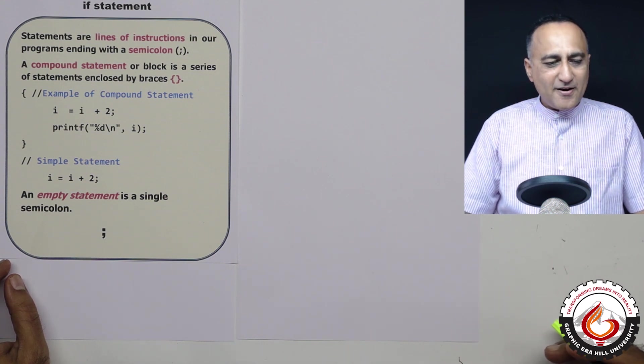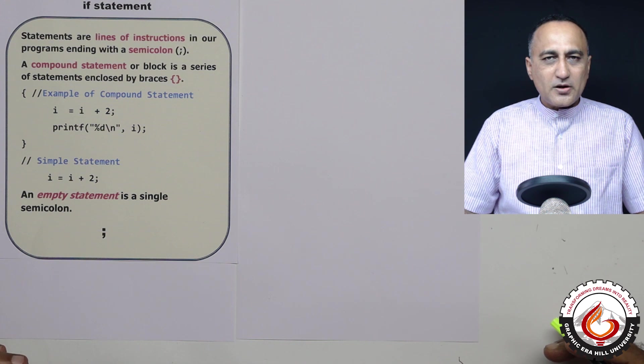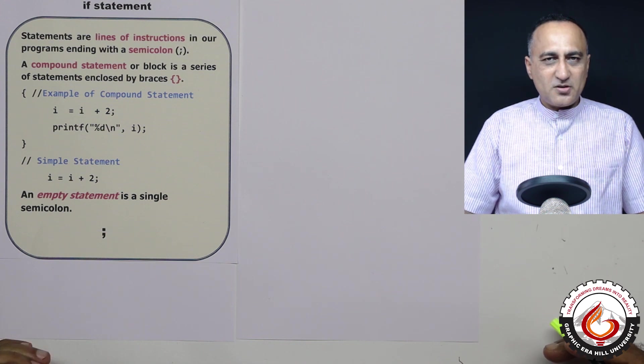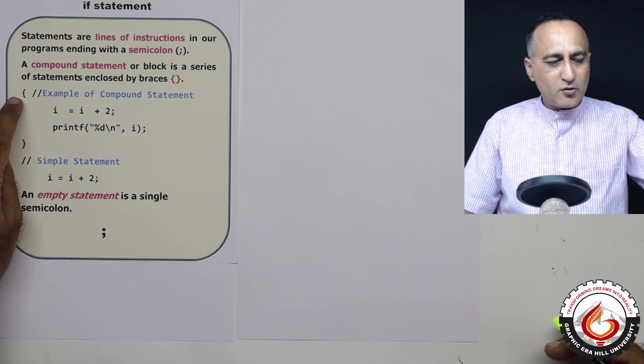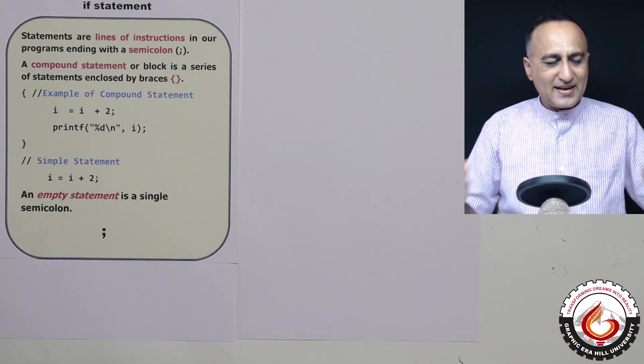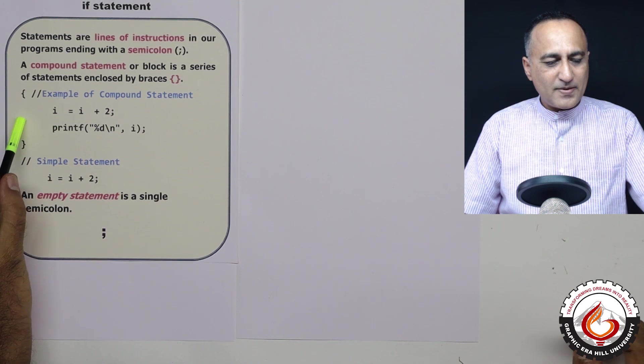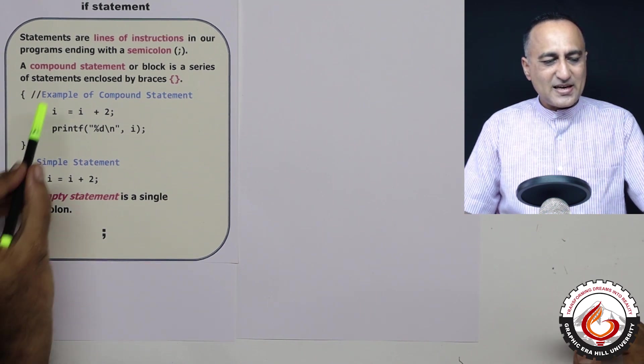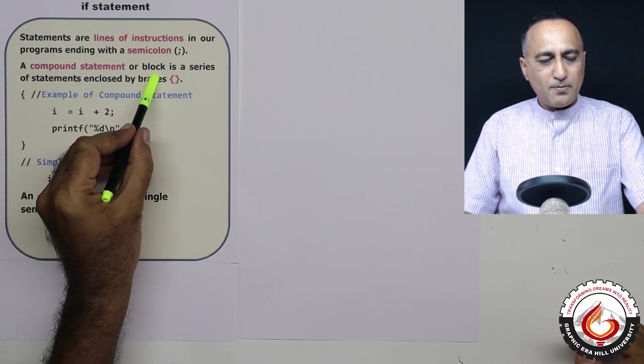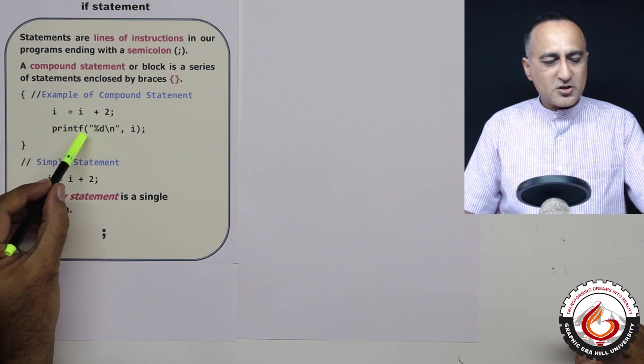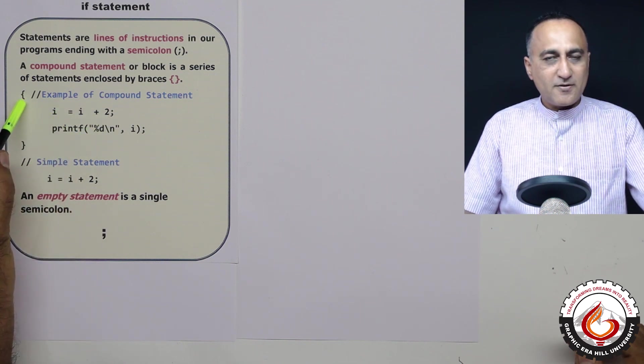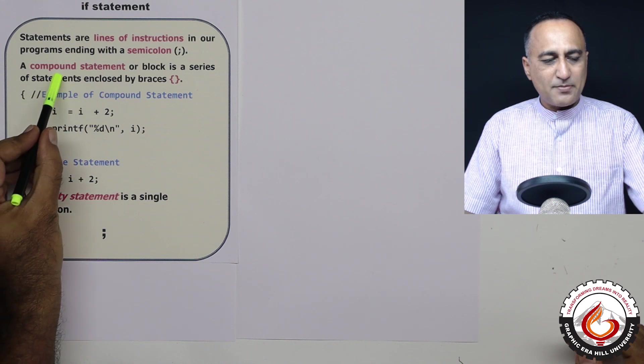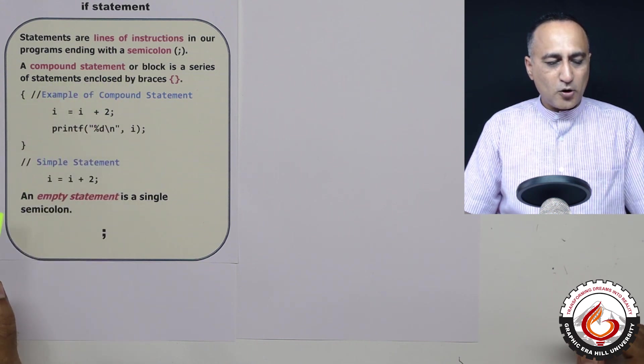If I have more than one instruction or even if I have zero instruction but if I enclose them in the curly braces like this, this is an example of a compound statement or a block. So here you see I have two instructions and I have enclosed it in a curly brace. So this is an example of a compound statement or block.